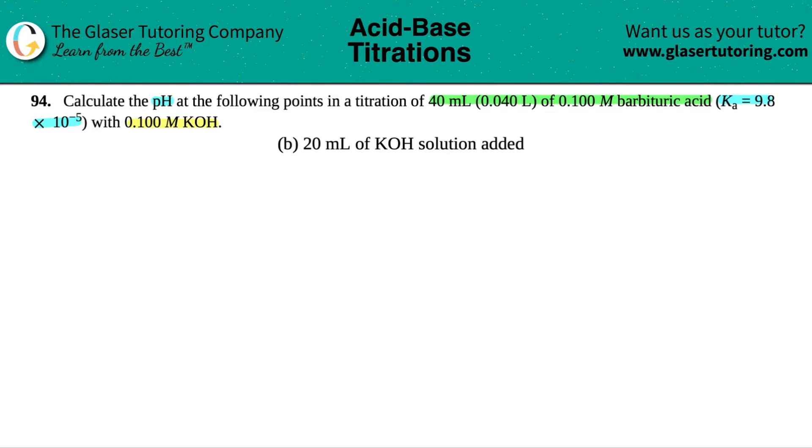And in this case, in letter B, we are adding 20 mL of the KOH to the solution. Okay, so since we're adding KOH, we're doing the titration. KOH should be standing out to you, right? KOH is on your list of the six strong bases.